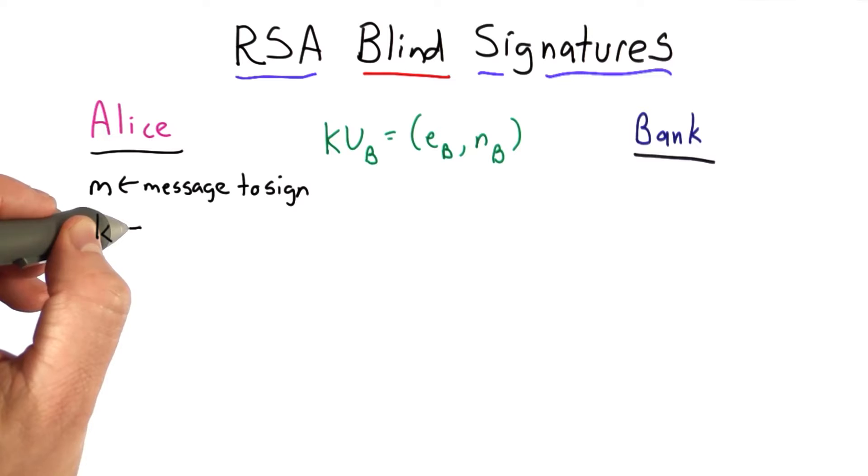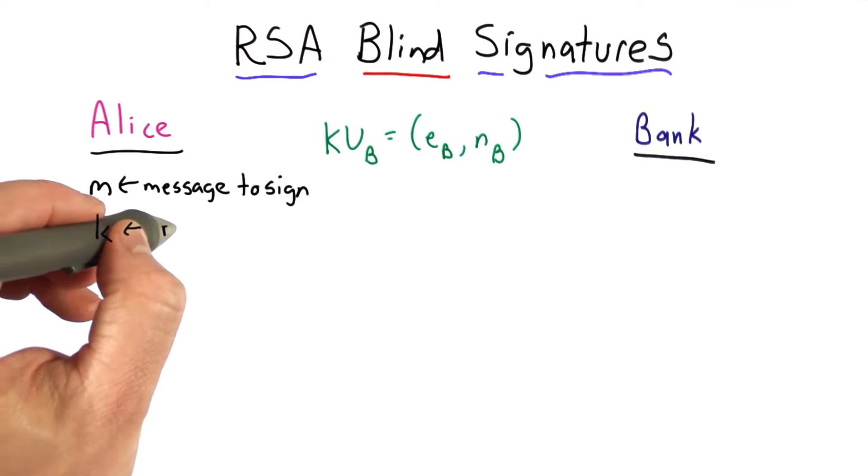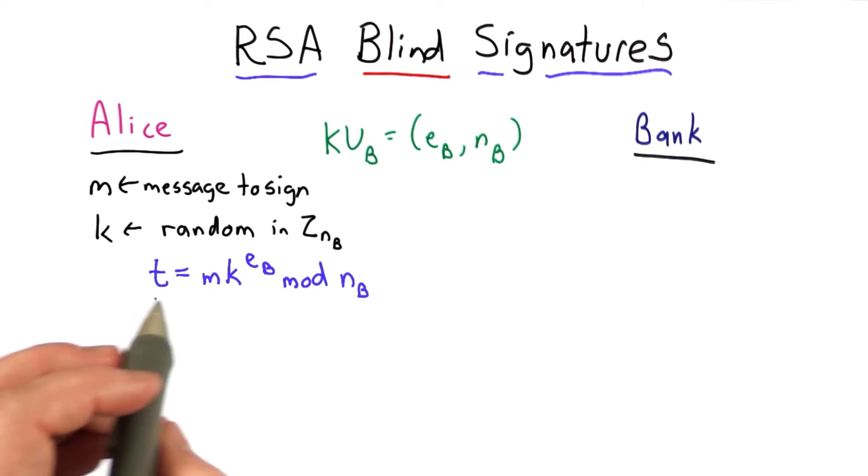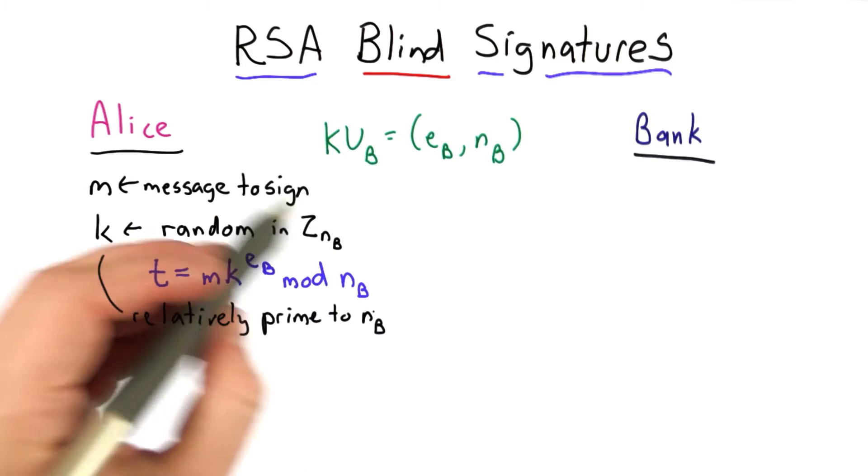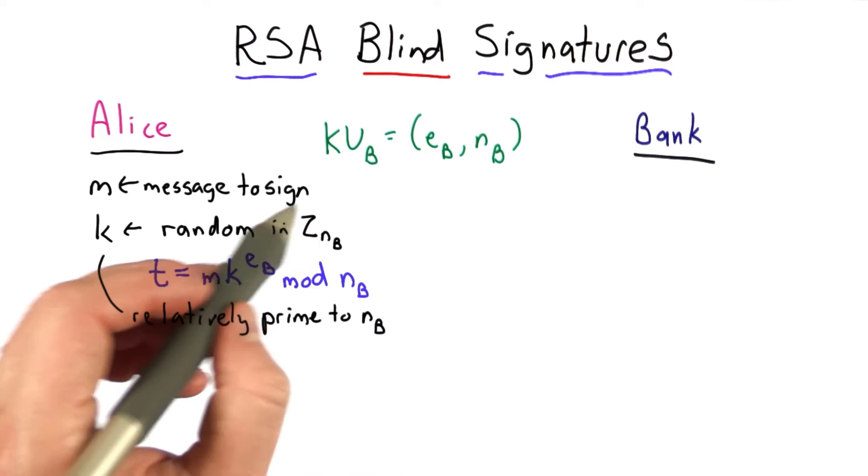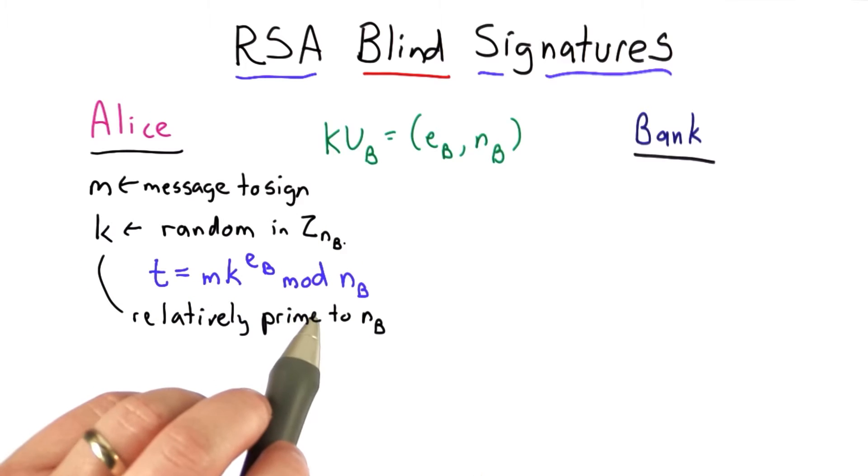Alice also picks a random value. We'll call that k. Next, Alice will compute t by multiplying the message by k raised to the eb power. If k is random, selected from the integers from 1 up to nb minus 1, and it's also relatively prime to nb,